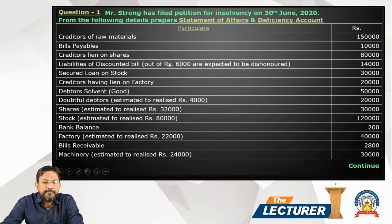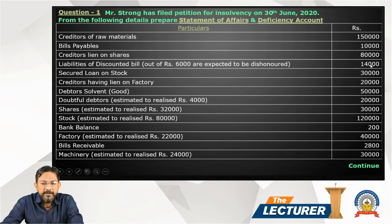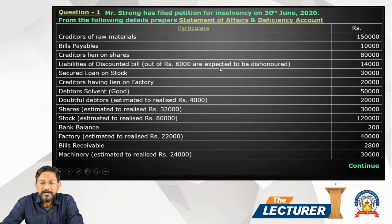Liabilities of discounted bills: discounted bills amount to 14,000, which means 14,000 bills are already discounted. Out of these, Rs. 6,000 are expected to be dishonored.